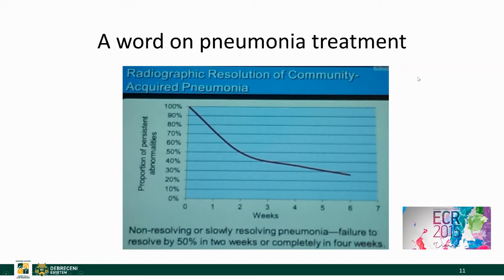A word of caution regarding pneumonia: we treat the patient, not the chest x-ray, but you should know that if a pneumonia fails to resolve by 50% in two weeks or completely in four weeks, it's considered a non-resolving or slowly resolving pneumonia. In those cases, especially if the patient is older, you should consider this as a result of a primary process such as cancer.